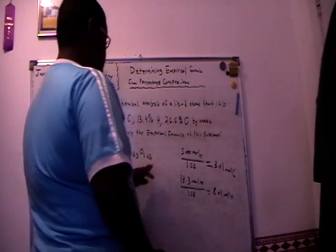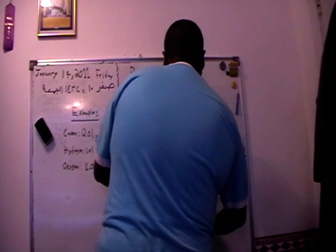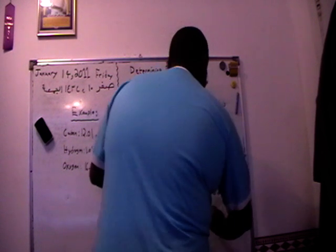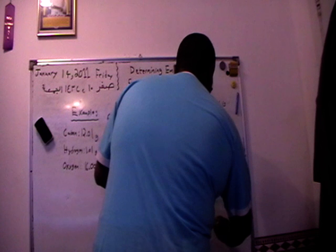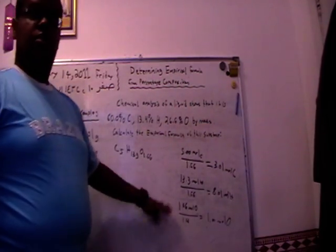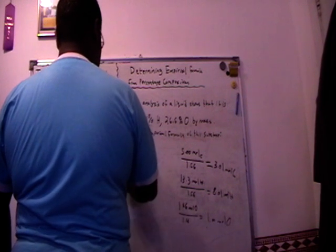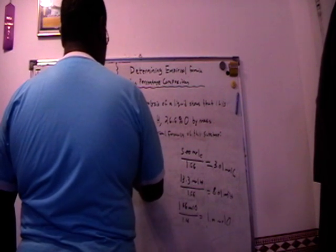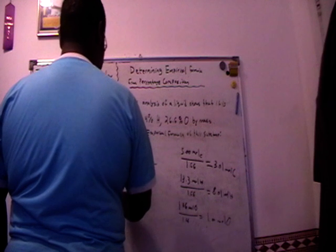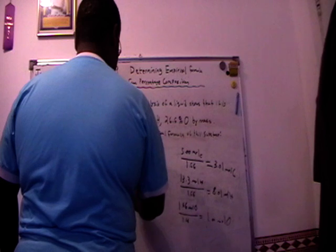And now oxygen: 1.66 mole oxygen over 1.66—that is obviously equal to 1.00. Now to write the new empirical formula: now we got the whole numbers. The new empirical formula equals carbon 3, hydrogen 8, and oxygen 1.